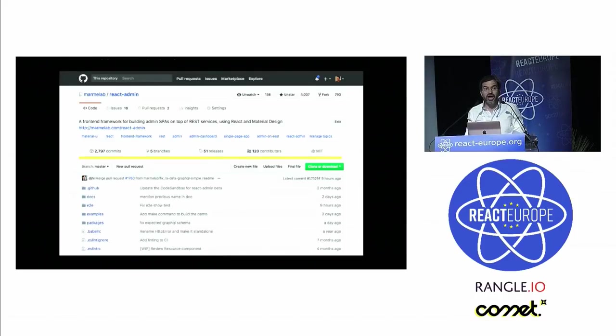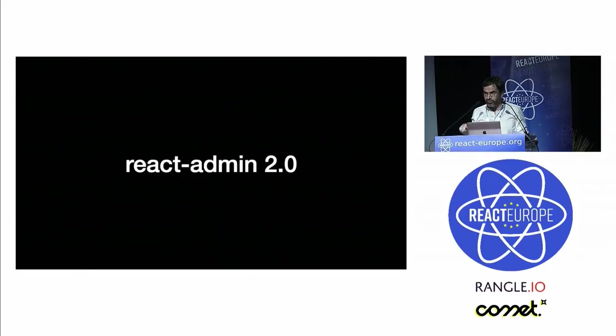React Admin used to be called Admin on REST. It was born two years ago. Today, it has more than 120 contributors, 4,000 stars on GitHub. And one last thing, we've deeply refactored React Admin in the past seven months to make it faster and easier to override. The new version, React Admin 2.0, will be released tonight. And we can't wait to see what you guys will do with it. Thank you very much.